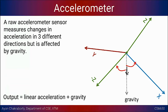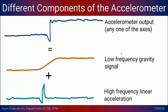To illustrate: if g is the gravitational vector, it will have components in x, y, and z. We need to find a way to tease apart these components — the gravitational component and the linear acceleration component.